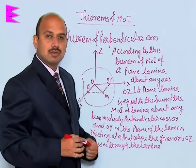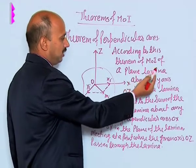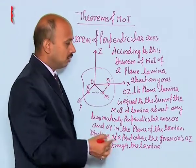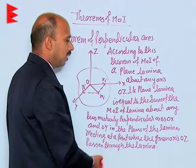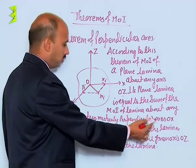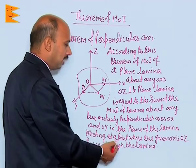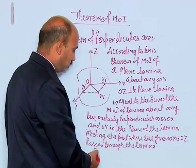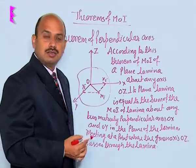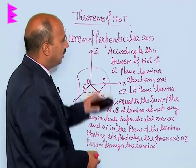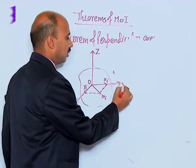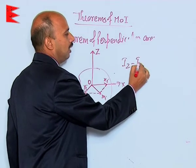Now, see the theorem of perpendicular axis. According to this theorem, the moment of inertia of a plane lamina about any axis O Z perpendicular to the plane lamina is equal to the sum of the moments of inertia of the lamina about any two mutually perpendicular axes O X and O Y in the plane of the lamina, meeting at the point where the given axis O Z passes through the lamina. So the total moment of inertia of this plane lamina equals I_Z = I_X + I_Y.